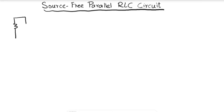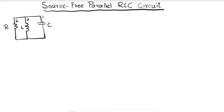Today we are exploring the source-free parallel RLC circuit. Let's draw the parallel RLC circuit first, where there is no source and R, L, and C are in parallel. This circuit is excited by the energy initially stored in the capacitor and inductor, represented by initial inductor current I_0 and initial capacitor voltage V_0.